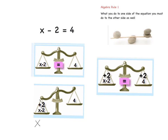We are adding 2 to the left and adding 2 to the right. Then we have x on the left equals 4 plus 2, which is 6 on the right. Done.